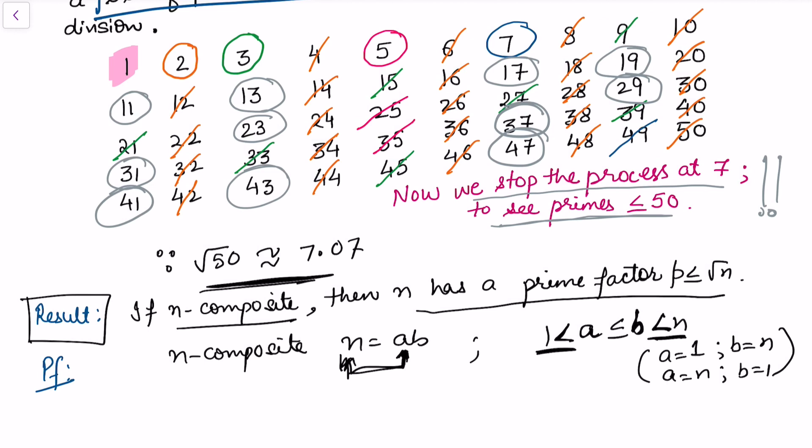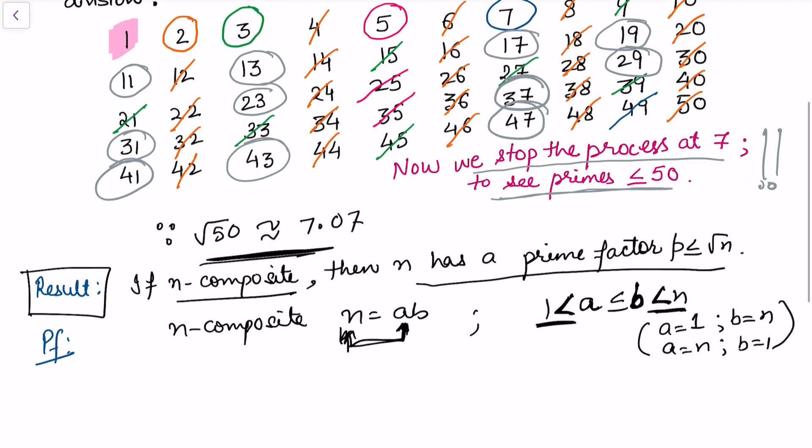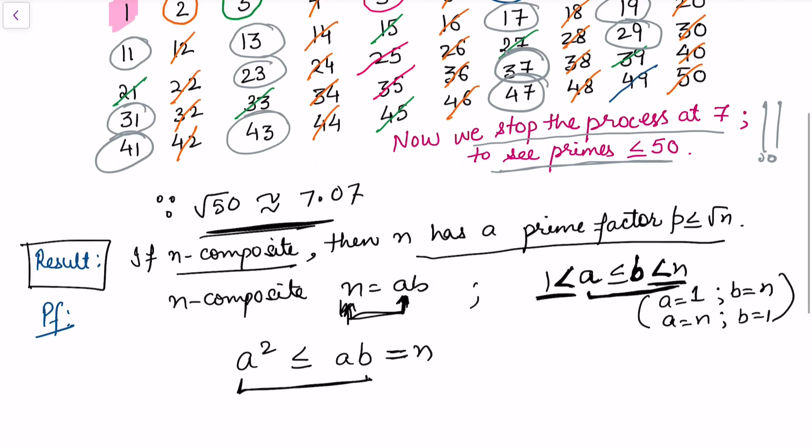Now we can write down that a squared is less than or equal to a times b, which is equal to n. So now from here this is very clear that a must be less than or equal to the square root of n. So if n is appearing as a multiple of a, that means a must be less than or equal to the square root of n.